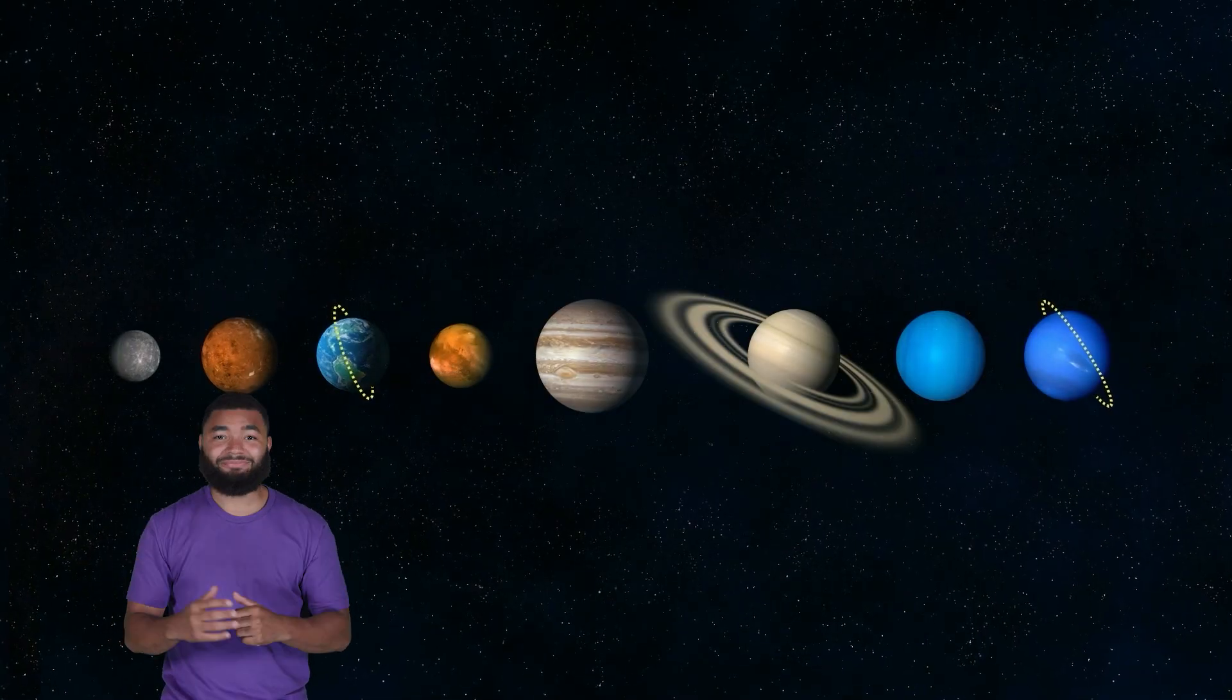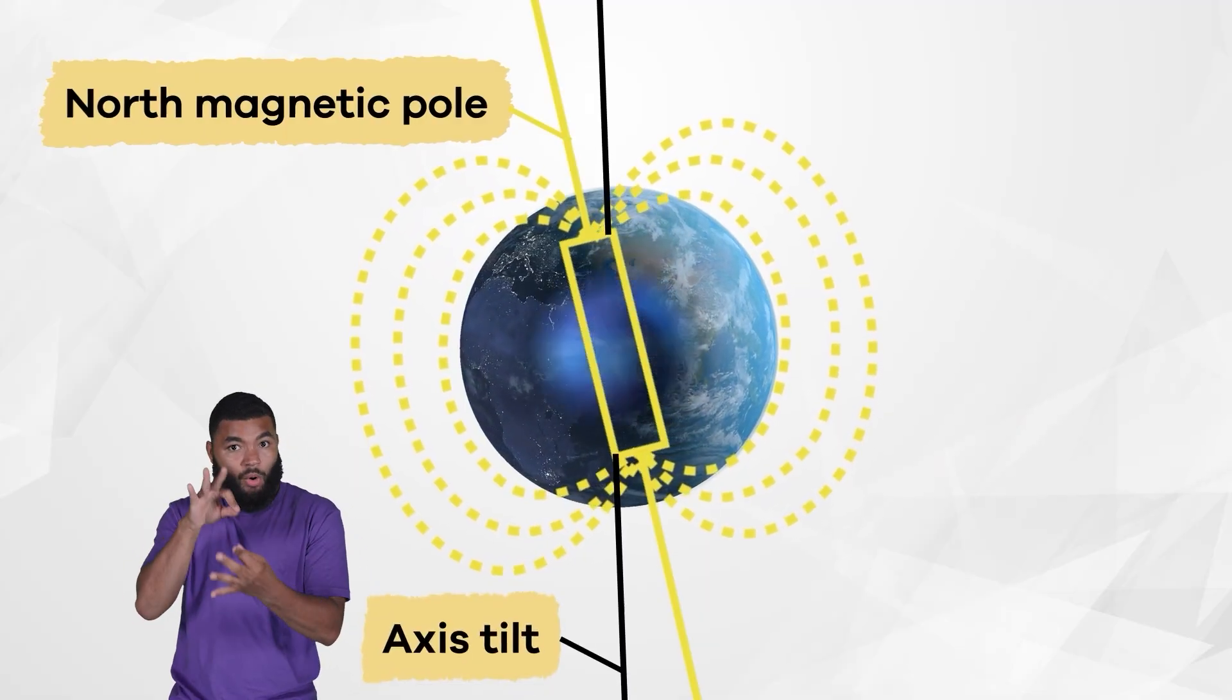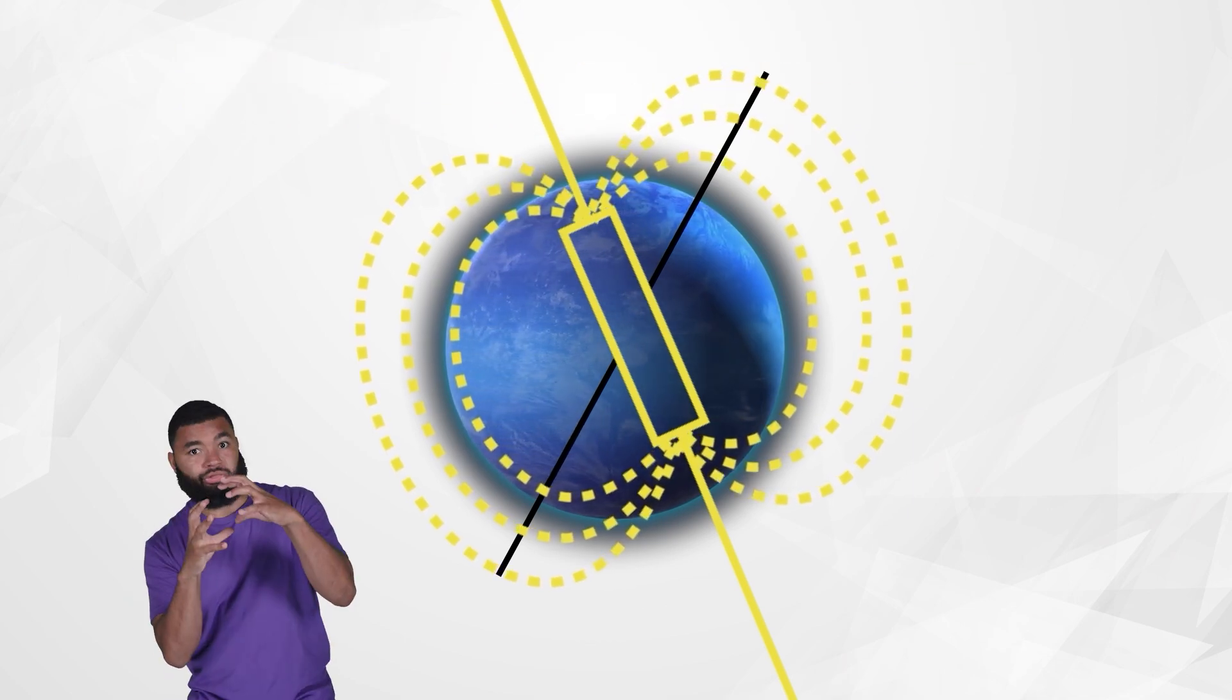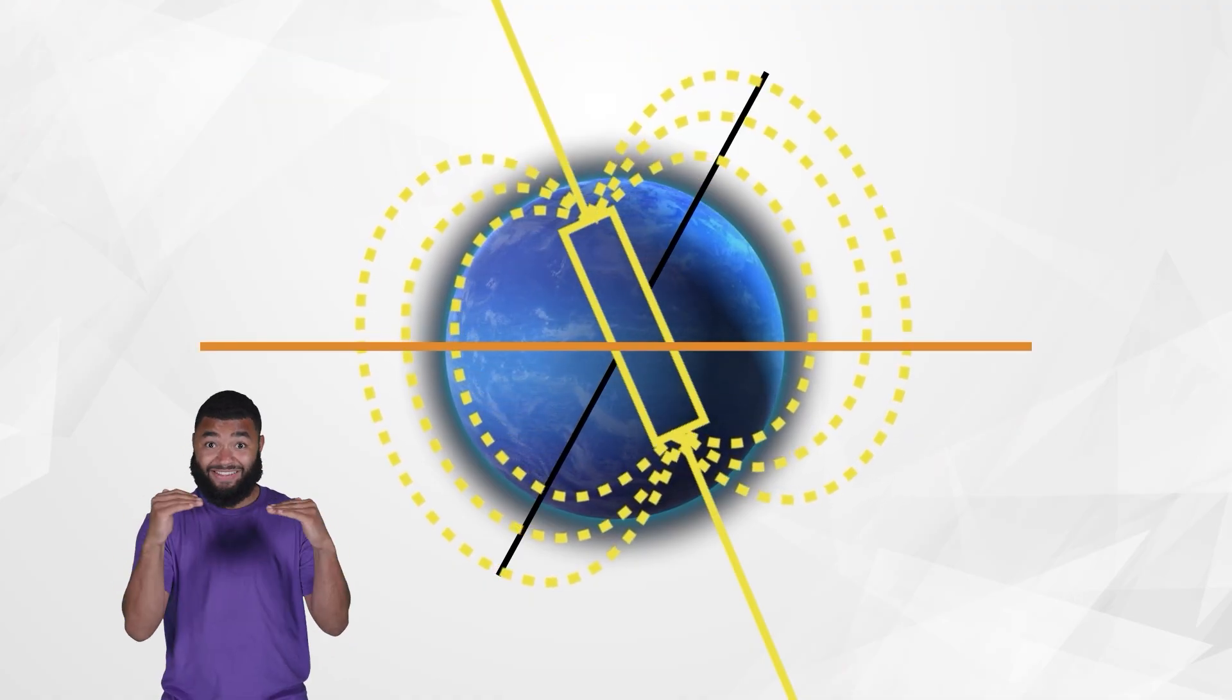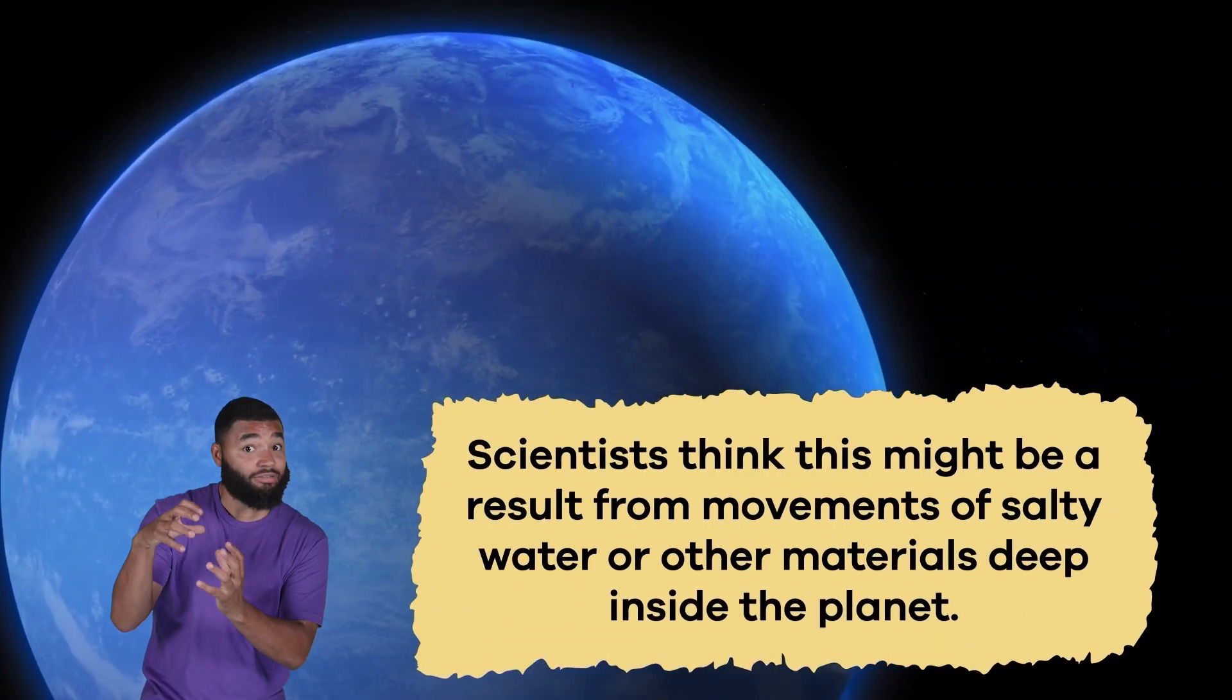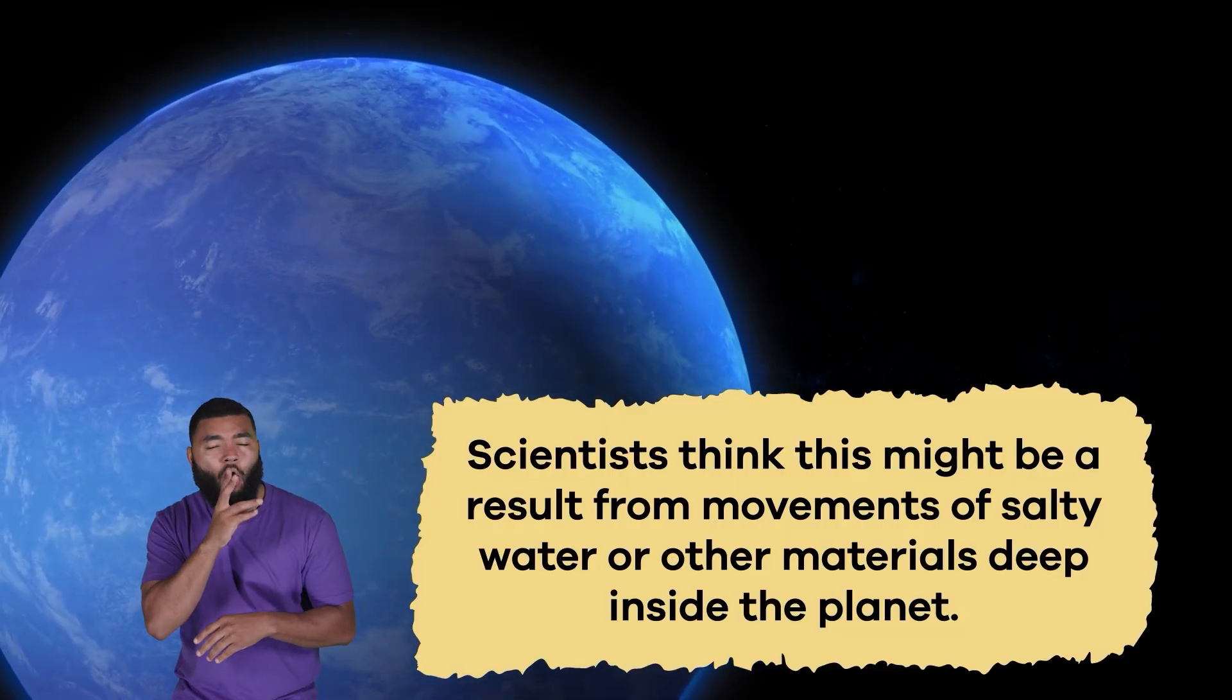Neptune's magnetic field is very unusual compared to Earth's. On Earth, the magnetic field lines up almost perfectly with the planet's axis, but Neptune's tilts around 47 degrees. This means that Neptune's magnetic field does not line up with the planet's center. Instead, the field is uneven and kind of lopsided. Scientists think this might be a result from movements of salty water or other materials deep inside the planet.